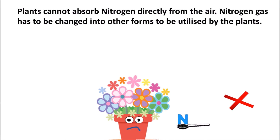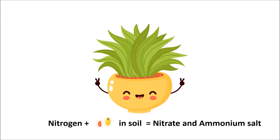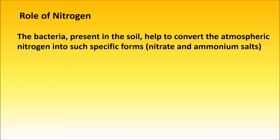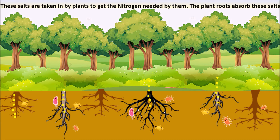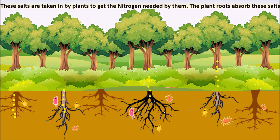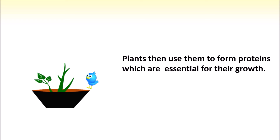However, plants cannot absorb nitrogen directly from the air. Nitrogen gas has to be changed into other forms to be utilized by plants. The bacteria present in the soil help convert atmospheric nitrogen into specific forms — nitrates and ammonium salts. These salts are absorbed by plant roots from the soil, and plants then use them to form proteins which are essential for their growth.